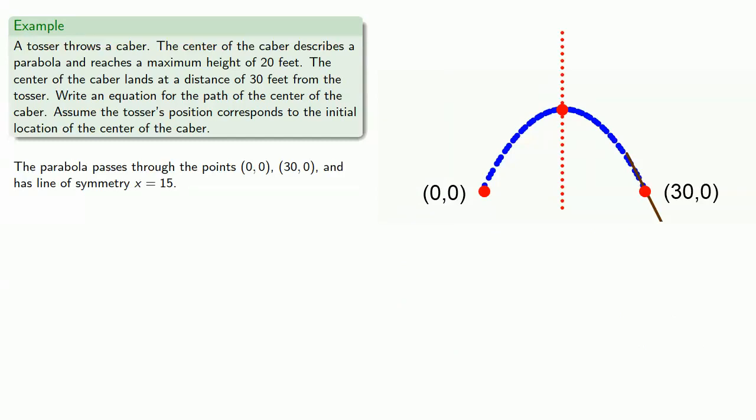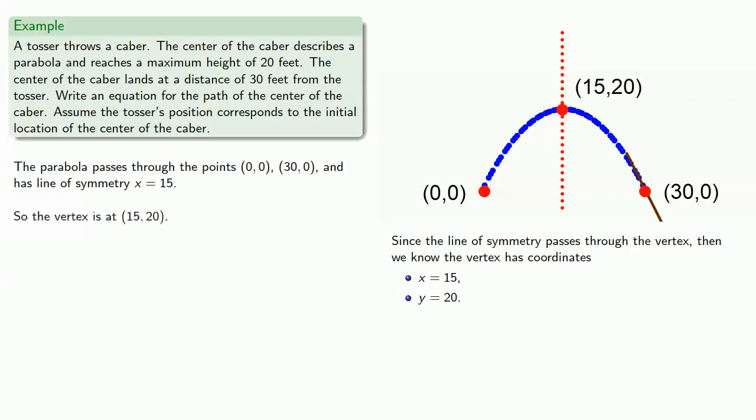Since the line of symmetry passes through the vertex, then we know the vertex has coordinates x = 15 and y = 20, the maximum height. And so we know the vertex is at (15, 20).